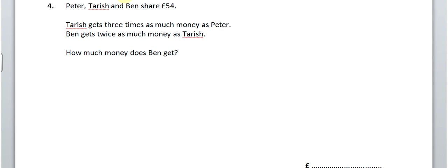Question 4. Now, I know many of you will do this by guessing numbers. But really, this is an excuse to whip out your algebra. So, give it a go. So, first of all, we've got Tarish, Peter, and Ben. So, we need to write, to decide which one we're going to call X. Unknown, or whatever letter you want. So, I'm going to call Ben. Ben is going to get X pounds. Now, Ben gets twice as much money as Tarish. So, that means that Tarish gets X divided by 2.